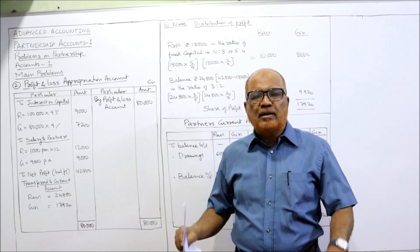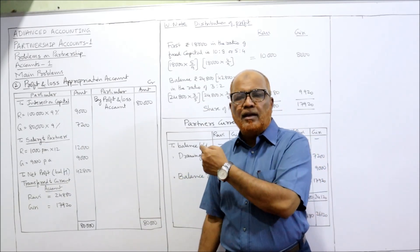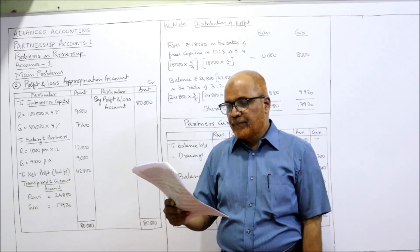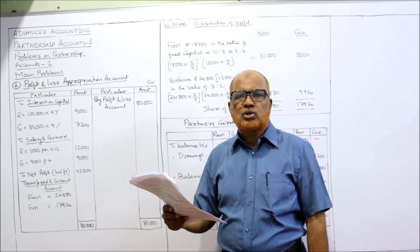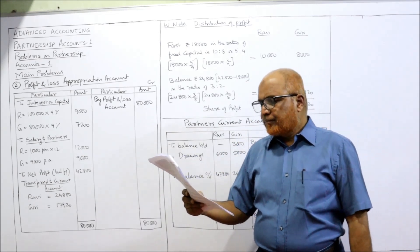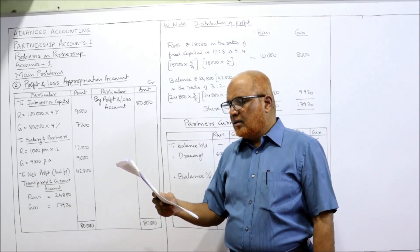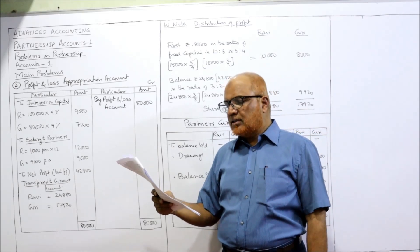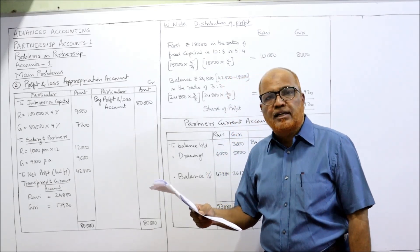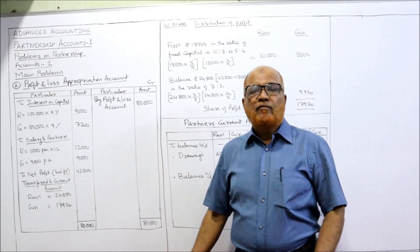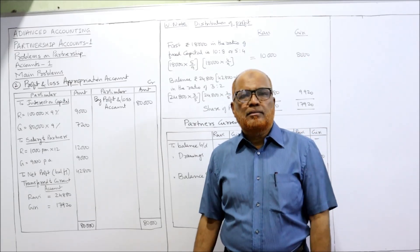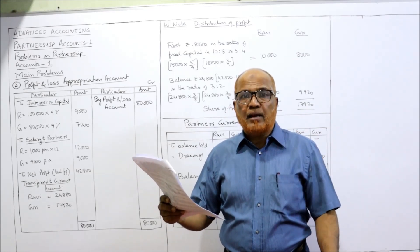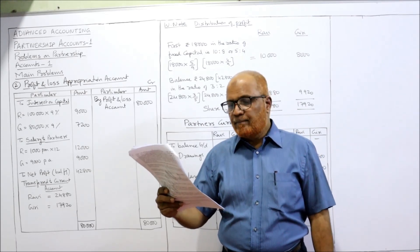One important point to remember: drawings will not be taken in the appropriation account. Drawings will be taken in the current account. Interest on drawings will be taken on the credit side if applicable, but in the current problem we don't have interest on drawings — we only have interest on capital. Now, the capital account balance at the beginning of the year: Ravi's capital is one lakh and Giri's capital is eighty thousand. The current account at the beginning of the year: Ravi has eight thousand credit balance and Giri has a debit balance of three thousand. Capital account always shows a credit balance, but current account may show a credit or a debit balance.